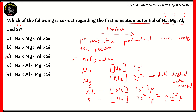The correct order would be option E: sodium less than aluminium, less than magnesium, less than silicon. The reason is that across a period, ionization potential increases. However, for magnesium, it's higher than usual because of a fulfilled outer orbital — the fulfilled 3s orbital gives it a higher ionization potential. The other options are incorrect: option A shows aluminium having the highest, option B shows the reverse order, and option D shows sodium having the highest, which is incorrect. Sodium has the lowest ionization potential among the four elements.